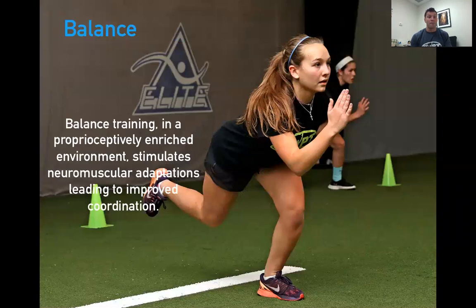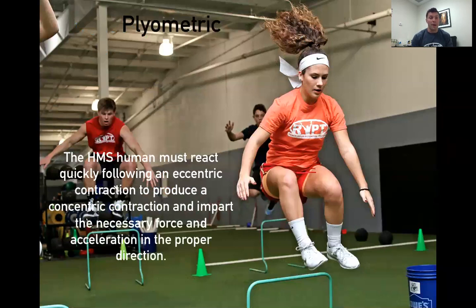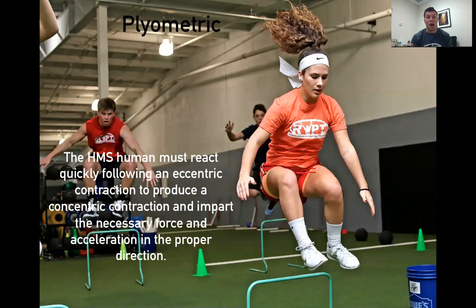Balance training in a proprioceptive-rich environment stimulates neuromuscular adaptations, leading to improved coordination, which is huge in athletics. With plyometrics, the human movement system must react quickly following an eccentric contraction, produce a concentric contraction, imparting the necessary forces to accelerate in the proper direction.